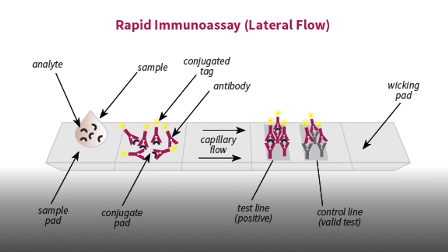Looking at a general lateral flow device: on one end, we insert a swab or a few drops of our patient sample, along with some buffer. This serves to break everything up and expose the antigens present in the patient sample. As the buffer begins to flow through capillary action across the filter paper, it first comes into contact with antibodies that are enzyme-linked.